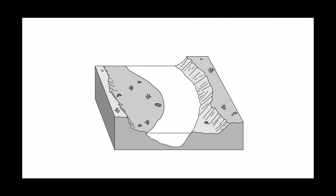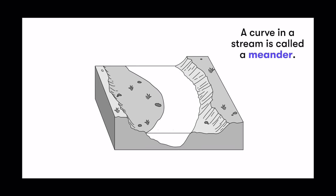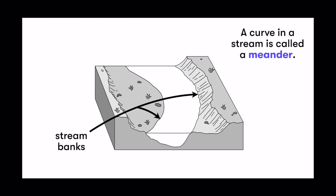Let's look at the anatomy of a river — some of the parts rivers have. When we see curves or bends in rivers, those are called meanders, and that's very important because at a meander we see a lot of erosion and deposition happening in specific ways. Along the edges of the stream or river we call those the banks, and along the bottom we call that the bed.